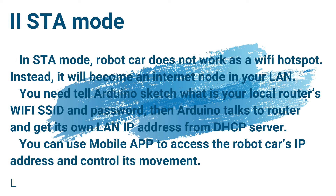In STA mode, the robot car does not work as a Wi-Fi hotspot. Instead, it becomes an internet node in your LAN. You need to tell the Arduino Sketch your local router's Wi-Fi SSID and password. Arduino then talks to the router and gets its own LAN IP address from the DHCP server. You can use the mobile app to access the robot car's IP address and control its movement.